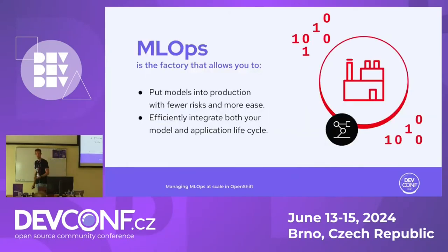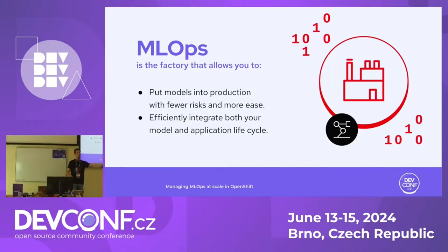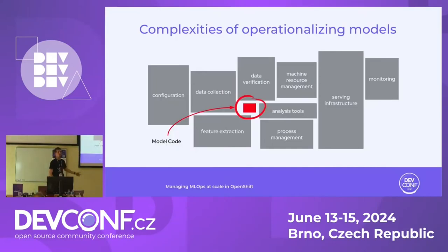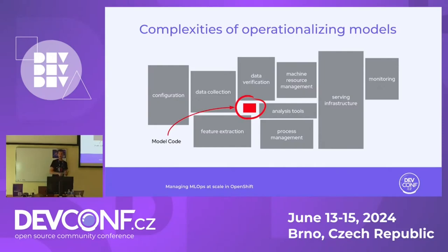MLOps is the factory that allows you to put models in production with fewer risks. We always have risks, but we try to minimize them and efficiently integrate the two life cycles — the model and the application. We face challenges when deploying these MLOps pipelines: this tiny piece is just the model code, but we also need serving infrastructure, monitoring, analysis tooling, data collection, fine-tuning, and training — a complex stack to handle.